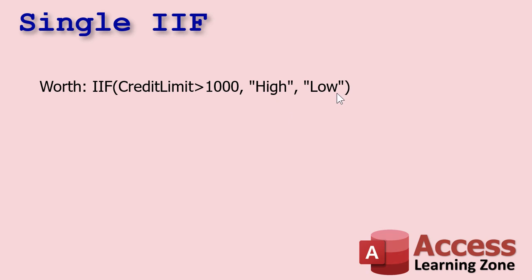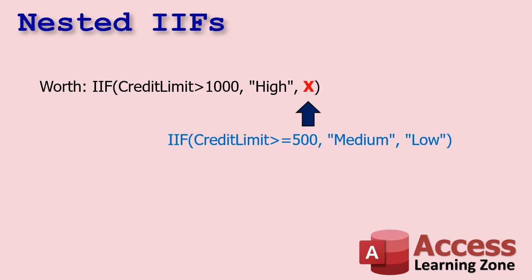Now if you want to add another condition, what we're going to do is write an entirely new IF function and jam it in that spot right there where the low used to be. So now we're going to say: if credit limit is greater than or equal to 500, then put "medium" in there. Otherwise put "low."